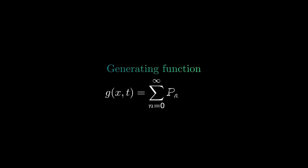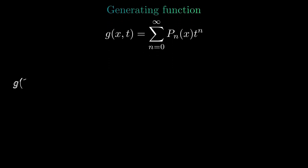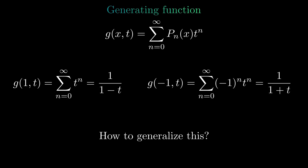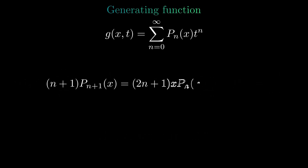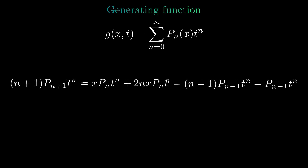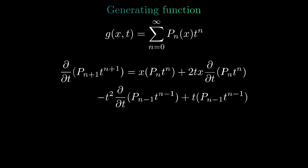Finally, we are going to encode all of the Legendre polynomials into one object — that of a generating function. We define a function in two variables where the Legendre polynomials form the coefficients of a power series. When we set x to 1, we get a sum over all powers of t, which equals 1 over 1 minus t if the absolute value of t is less than 1. Similarly, setting x to minus 1 gives 1 over 1 plus t. Starting from Bonnet's recursion formula and multiplying by the nth power of t, we can replace the n in the coefficients with partial derivatives with respect to t.